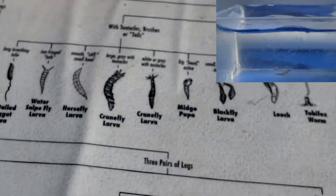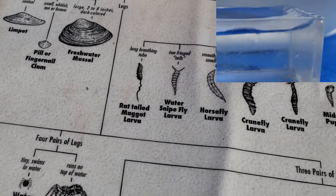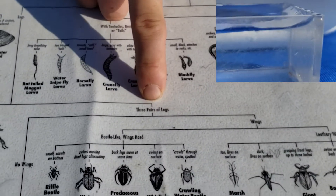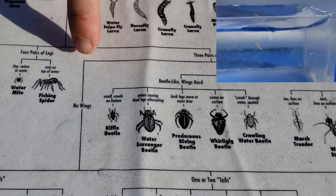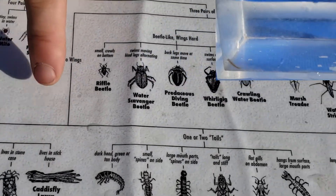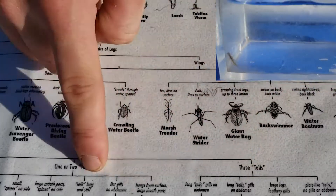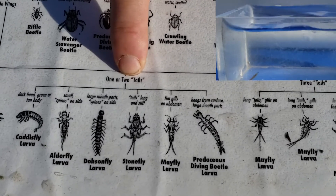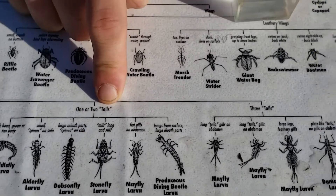The third question is: how many legs does it have? Does it have 10 plus pairs of legs, four pairs of legs, or three pairs of legs? And this one has three pairs of legs. The next question is whether or not our macroinvertebrate has wings, and this one definitely doesn't have wings. Does it have no obvious tail, one or two tails, or three tails? Our macroinvertebrate today has two tails, and that makes it a lot easier to narrow down — it looks like our first macroinvertebrate is a stonefly.